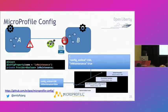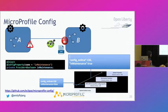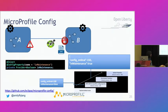Next is externalizing configuration. MicroProfile Config provides a way to store configuration external to your application. You use @ConfigProperty to inject a property into a variable. This property can be specified in various config sources: a microprofile-config.properties file, environment variable, system property, or a custom config source — each with an associated config ordinal. If specified in multiple places, the source with the highest config ordinal wins.